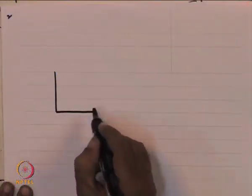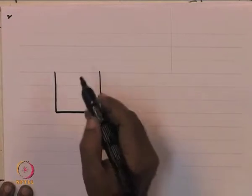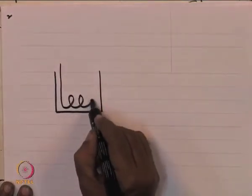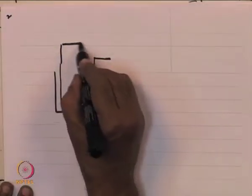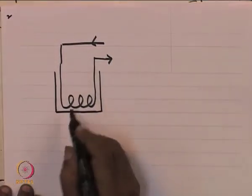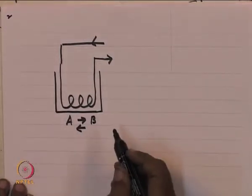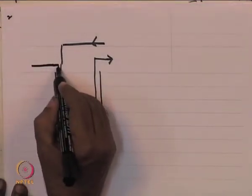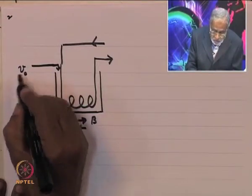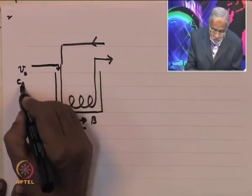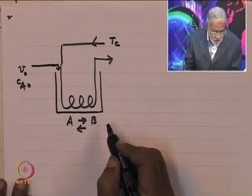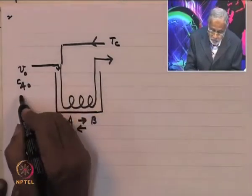We look at a practice problem in energy balance in this lecture. We have a stirred tank with a cooling coil, where reaction A going to B is quite reversible. The feed has volumetric flow rate V naught, composition C_A0, coolant temperature T_c, and feed temperature T_naught.